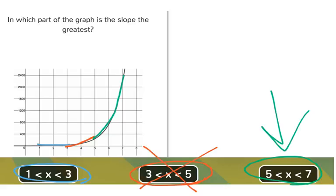So it looks like the slope is the greatest between 5 and 7. Not between 3 and 5. Not between 1 and 3. The slope increased more as we went along there.